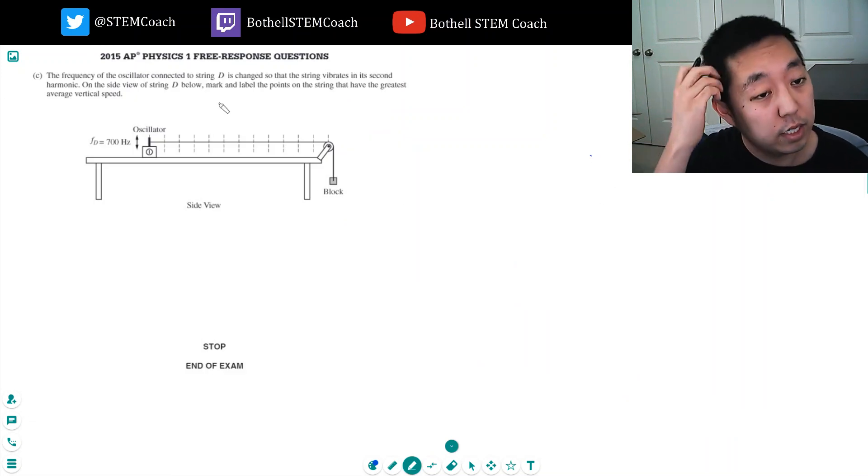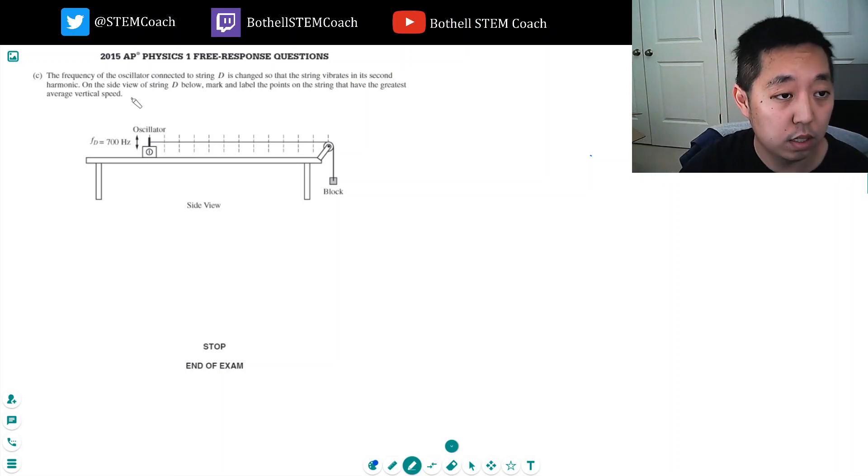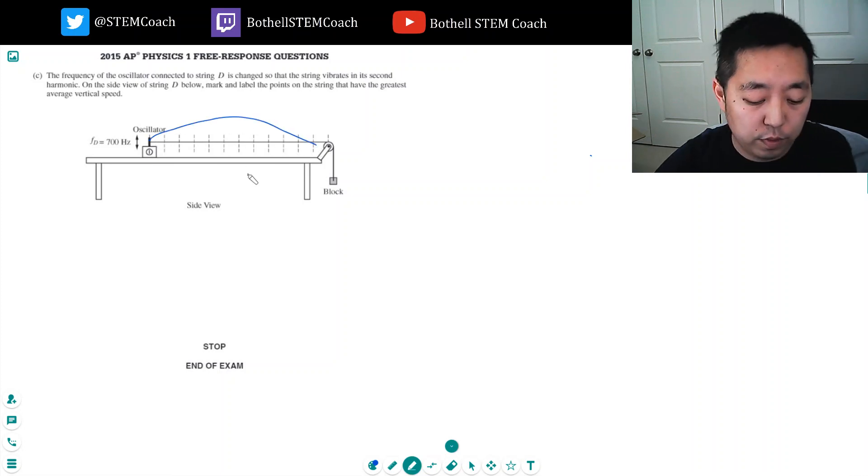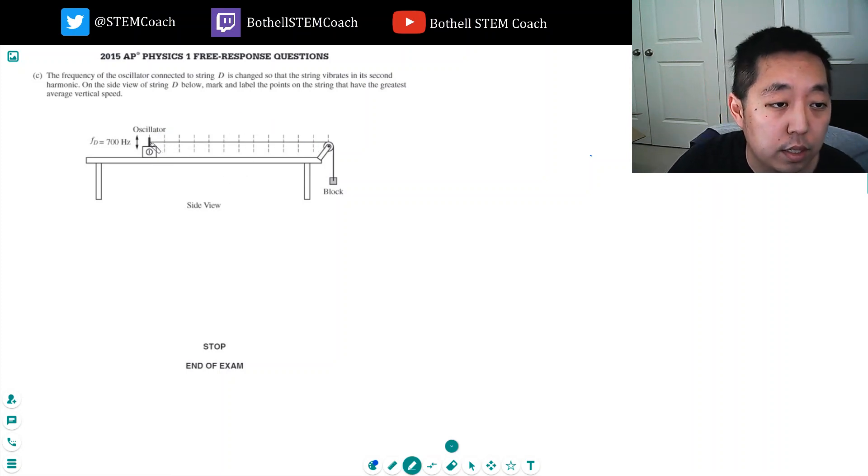The frequency of the oscillator connected to string D is changed so it vibrates in its second harmonic. On the side view of the string below, mark and label the points of the string at the greatest average vertical speed. So, it's going up and down. Remember, the fundamental frequency, if this is a stuck point, like anchored, then this would be the initial frequency. And the first fundamental would look like this. Right?